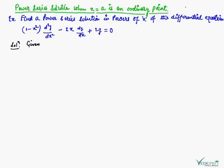Here we are going to explain the power series solution when x is equal to a is an ordinary point. In this example, we have to find a power series solution in powers of x of the given differential equation, which is (1 - x²)d²y/dx² - 2x dy/dx + 2y = 0.